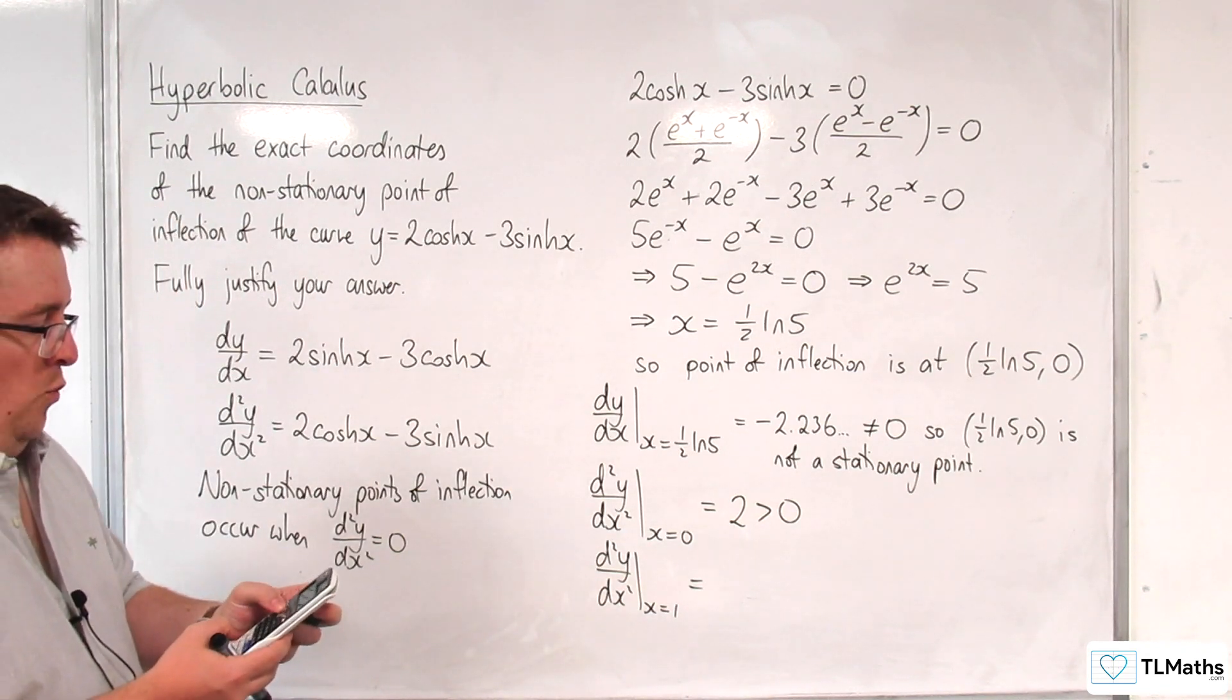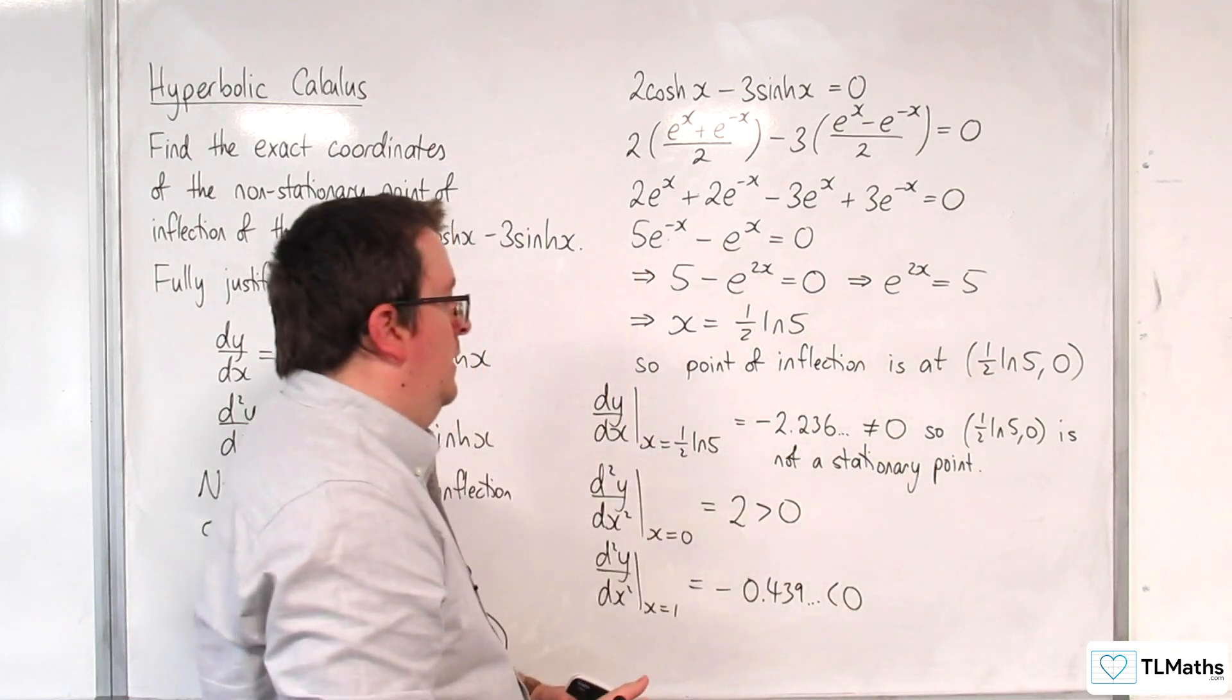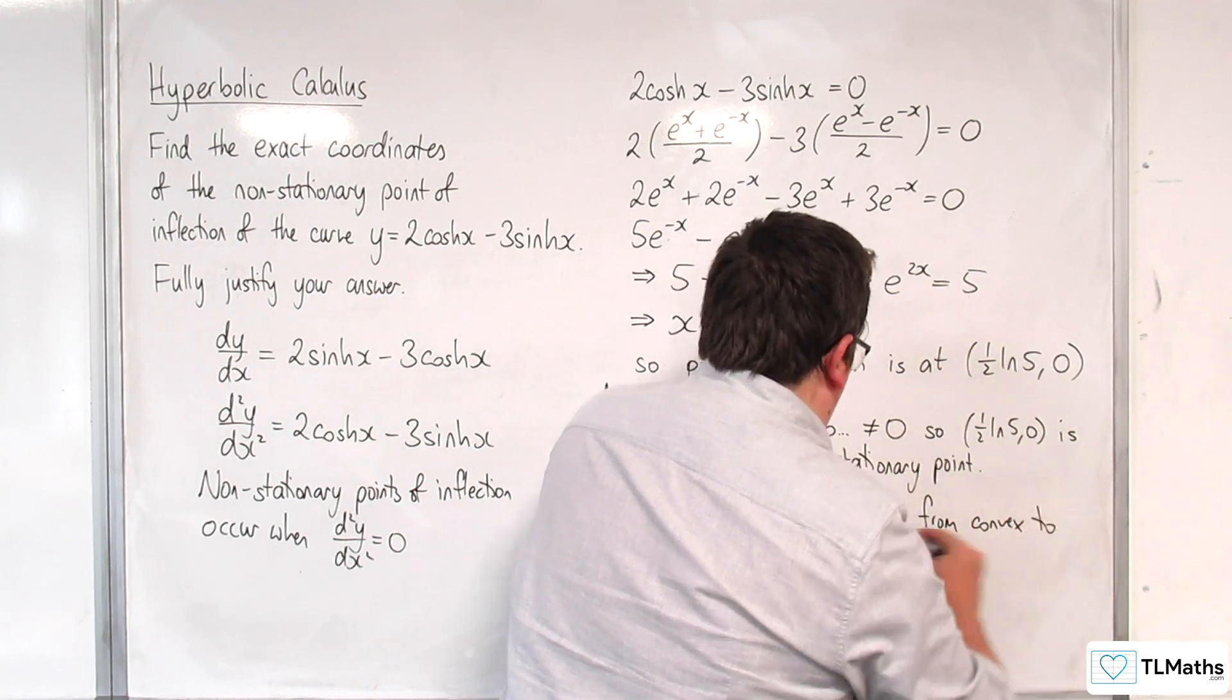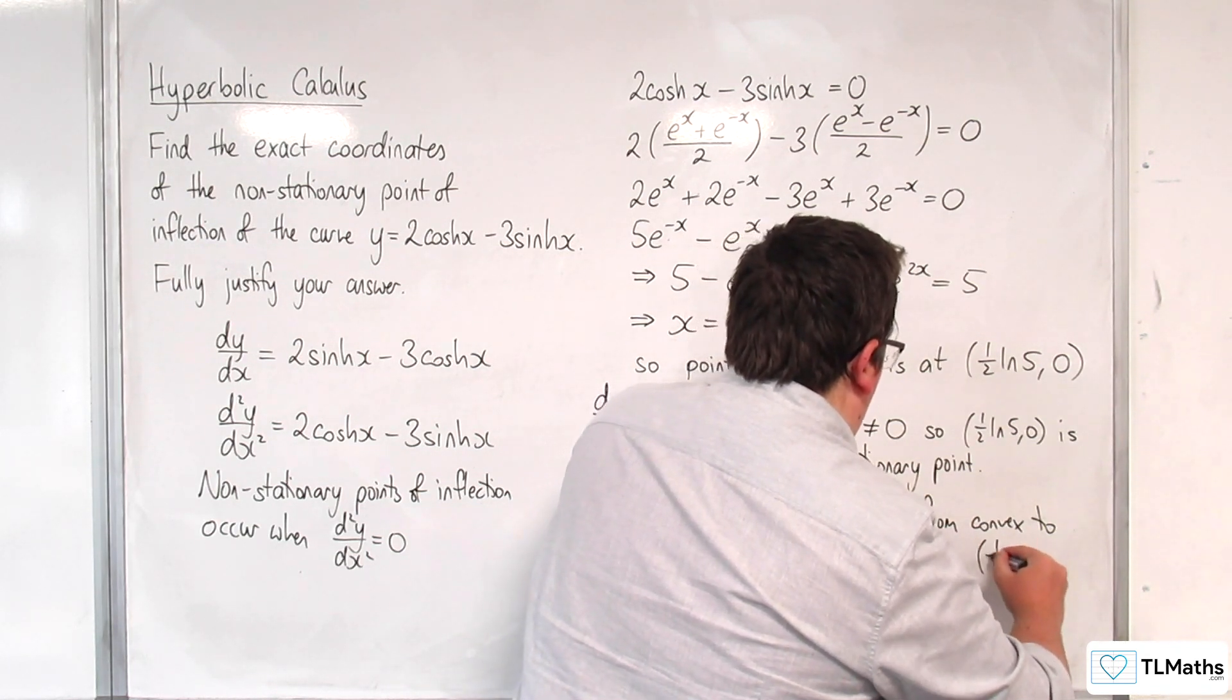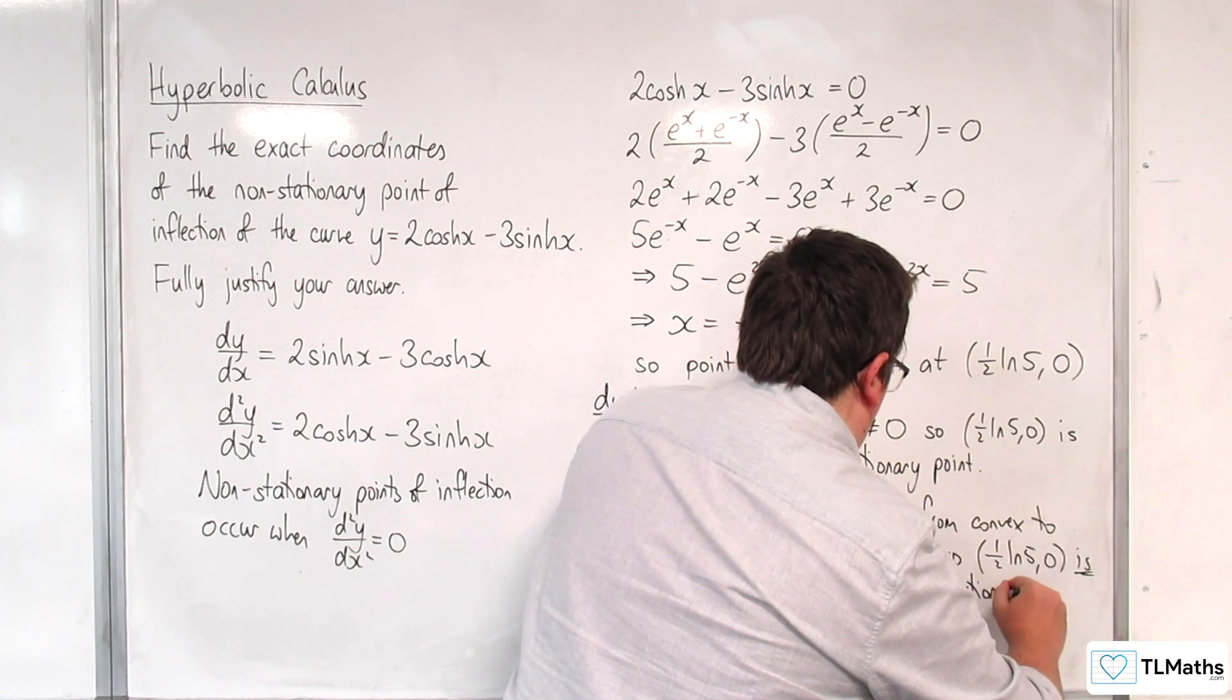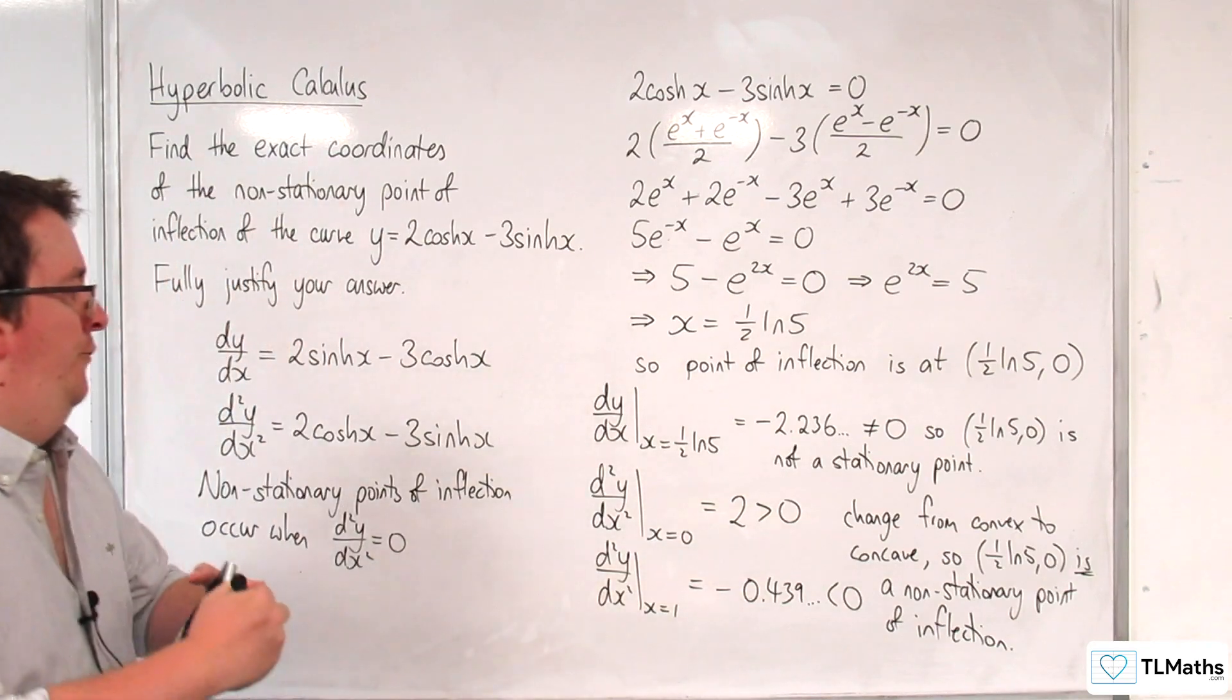And let's change those to 1's. And we get -0.439, which is negative. So (½ln(5), 0) is a non-stationary point of inflection. And that is fully justified.